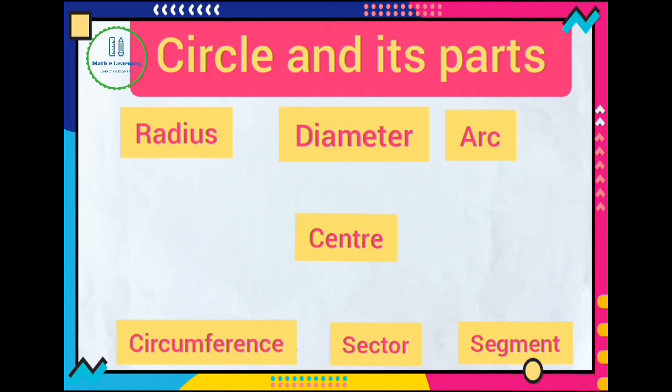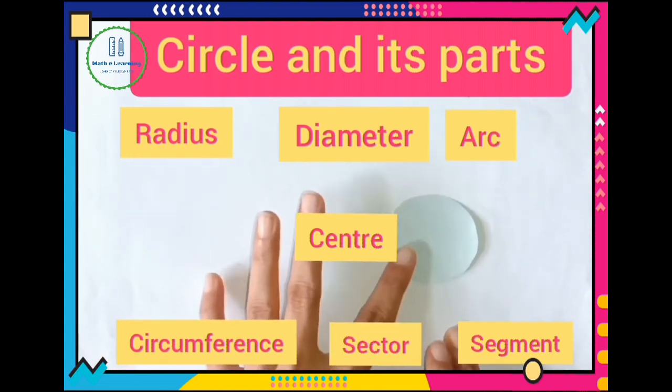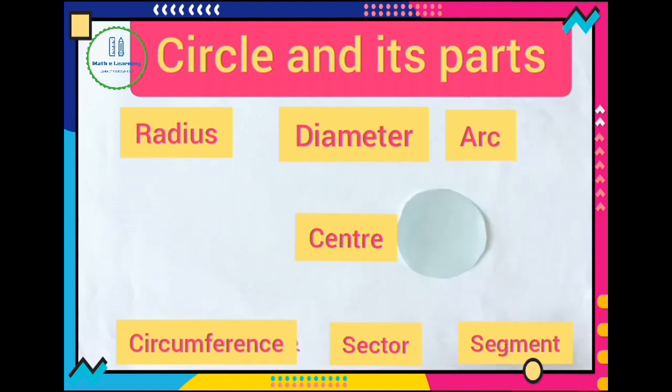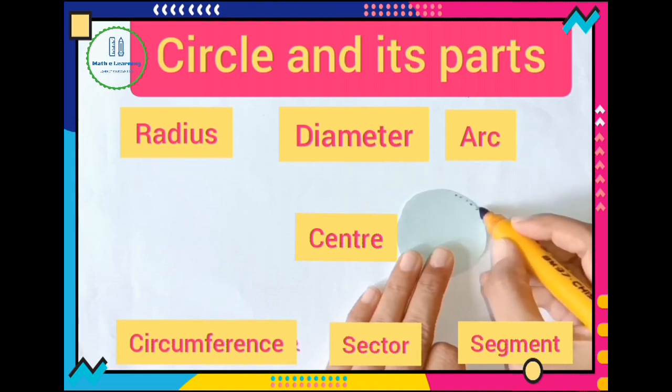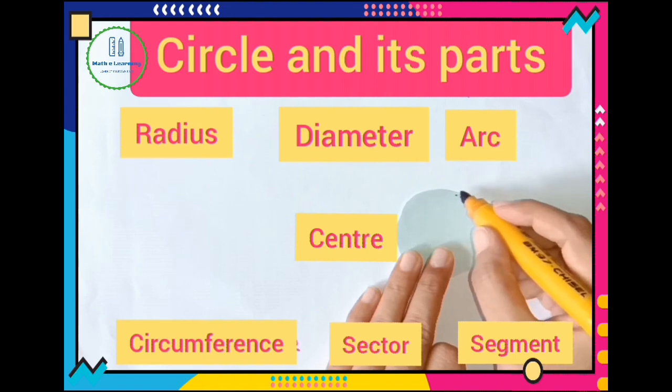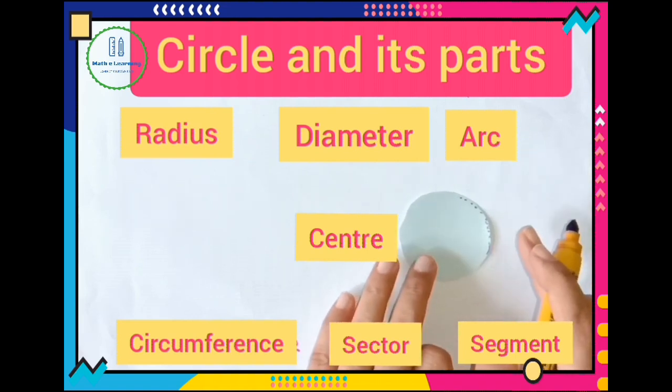You all know about circle but we revise one time. Here I have one circle and we know that actually circle is a group of dots and these dots are too much nearer that we cannot identify it individually.